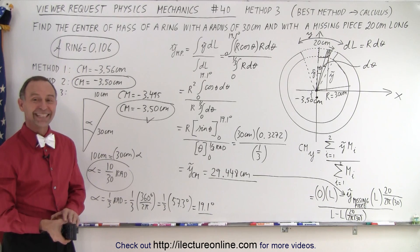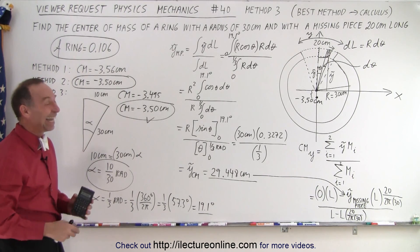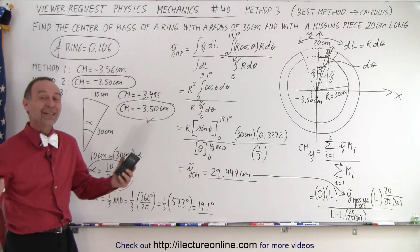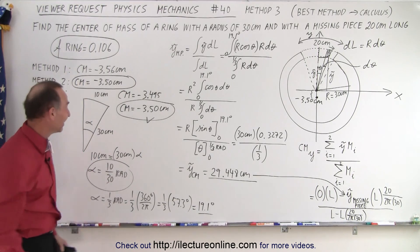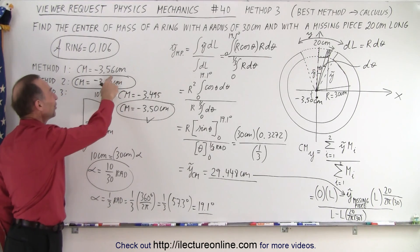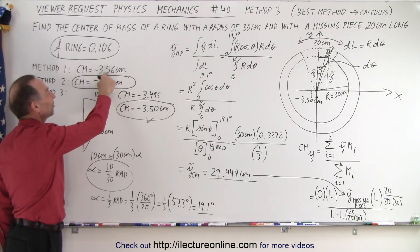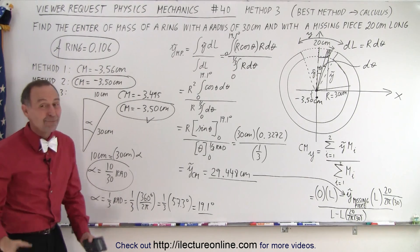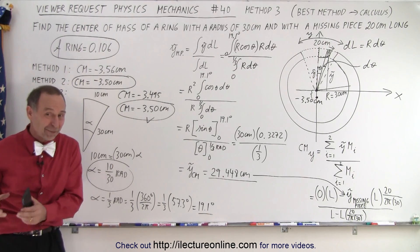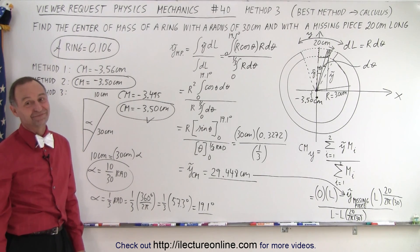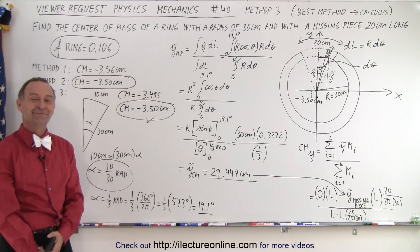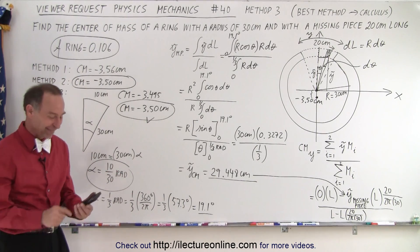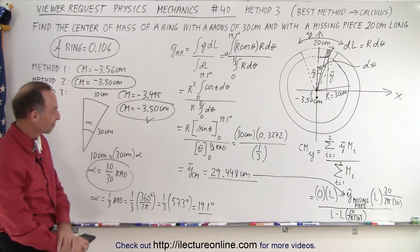Method 1 is close enough. When it comes down to it, method 1 is a perfectly valid method that gets you really, really close. Notice these are centimeters — these are millimeters. We're talking about only 0.6 of a millimeter difference, and the ring is 30 centimeters. Close enough. I like method 1 best.